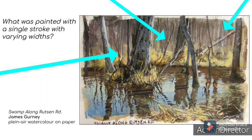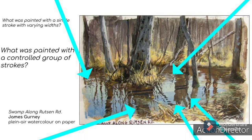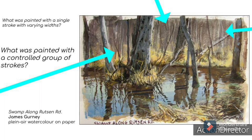So what was painted with a controlled group of strokes? Once again, some of the reflections were painted with groups of strokes to show some ripples in the water. The forest in the background is actually created with a pattern of vertical strokes.